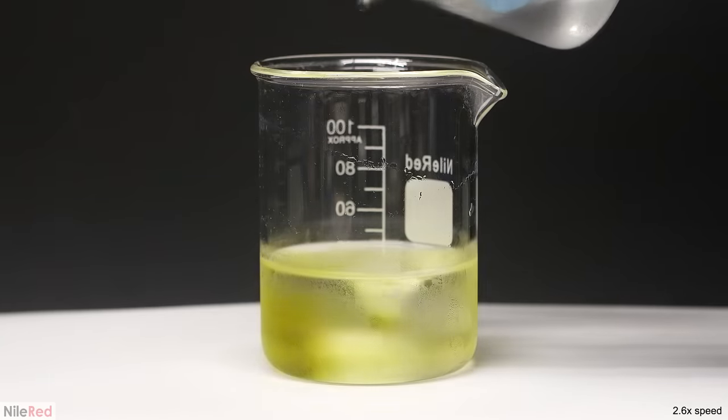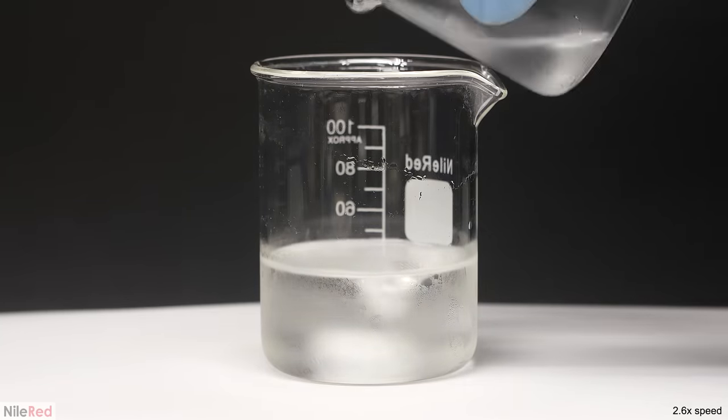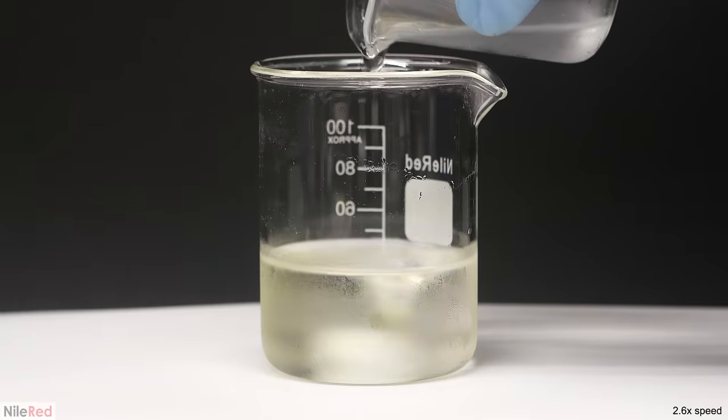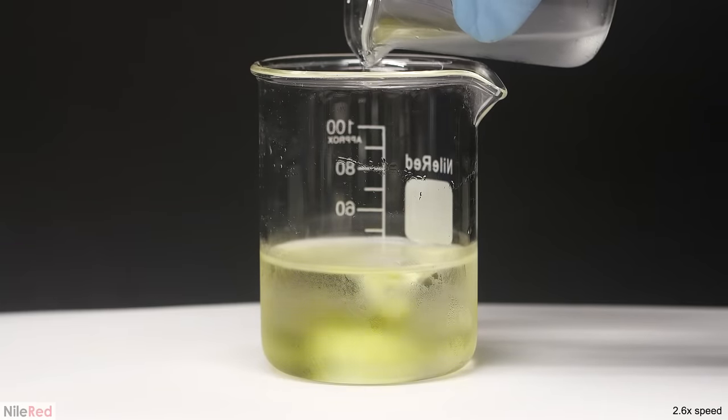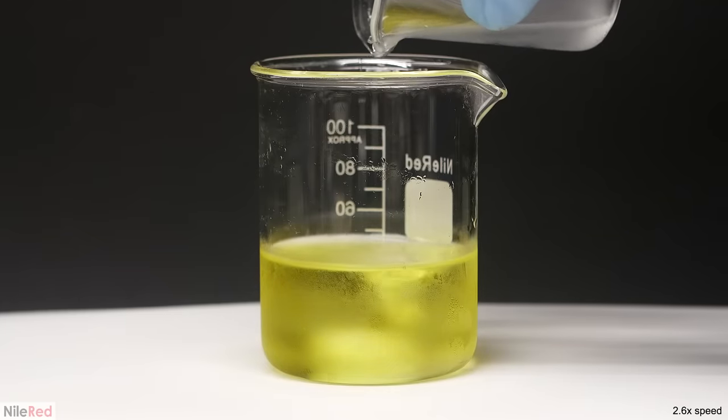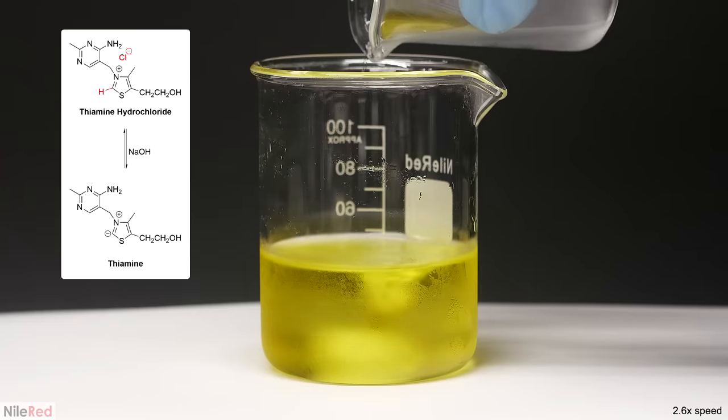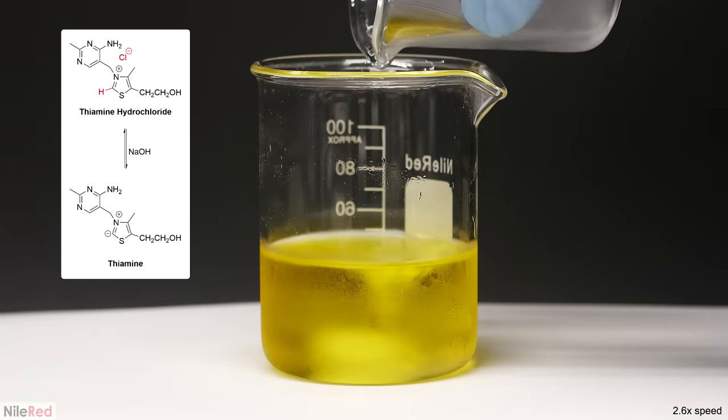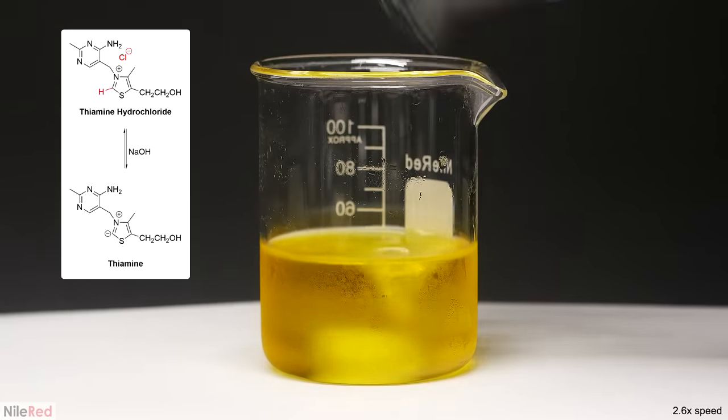Both solutions were put in the freezer, and I took them out when they were around 0°C. With good stirring, the base solution was slowly added to the thiamine hydrochloride, and a yellow color started to appear. The reaction going on here was between the sodium hydroxide and the thiamine hydrochloride to make just thiamine, which was the active catalyst.